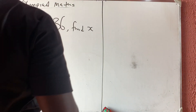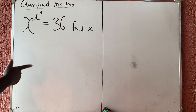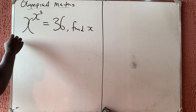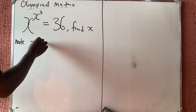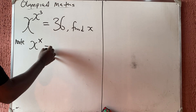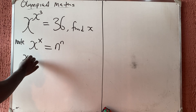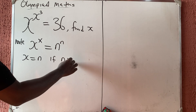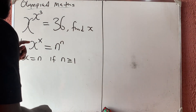Let us quickly solve this olympiad problem. They gave us x raised to the power x raised to the power 3, equal to 36 — find x. One thing you need to note: if x raised to power x equals n raised to power n, then x must equal n, provided that n is greater than or equal to 1.